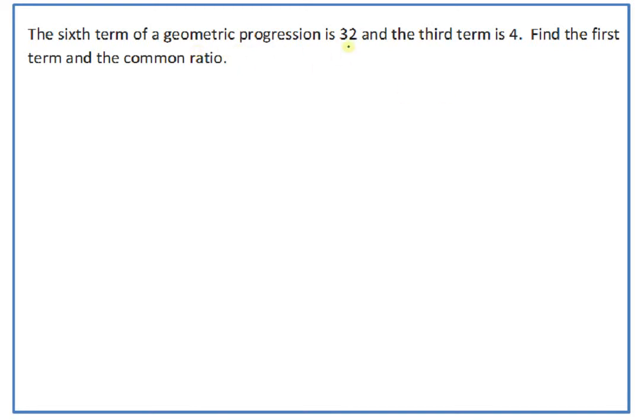The sixth term of a geometric progression is 32 and the third term is 4. Find the first term and the common ratio. The first term is A and the common ratio is r.